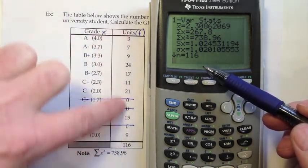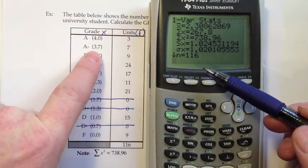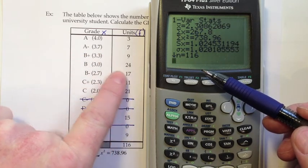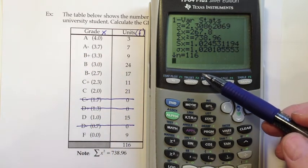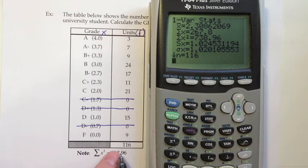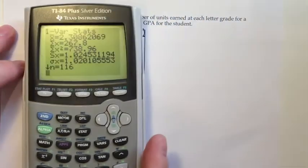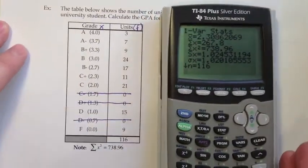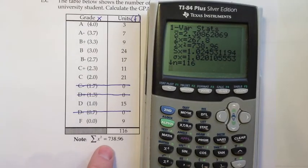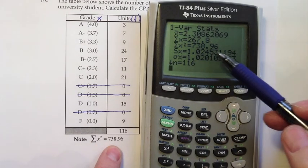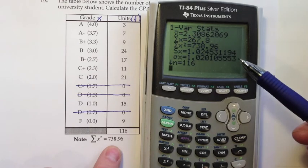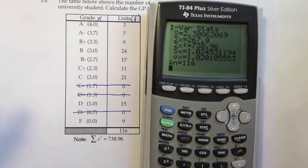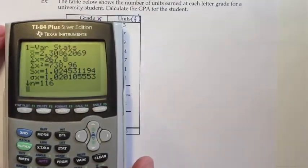Notice it thinks we have 116 values. So somehow it is really counting these as if there were 7 times that we got a 3.7 and 24 times that we got a 3.0. And that's good. That's matching up with our total number of units. And then I'll slide this out of the way. Here it is. I gave you a sum of the x squareds. So 738.96. 738.96. That's matching. So I feel good that I don't have typos. And now I want to write down my answer.